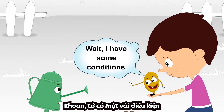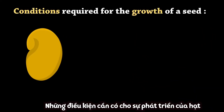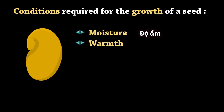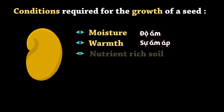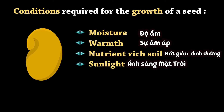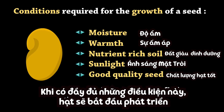Wait, I have some conditions. Conditions required for the growth of a seed are: moisture, warmth, nutrient-rich soil, sunlight, and good quality seed. Once these conditions are satisfied, the seed begins to grow.